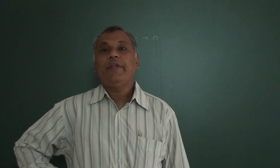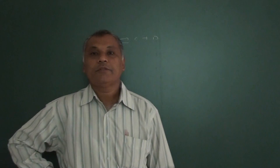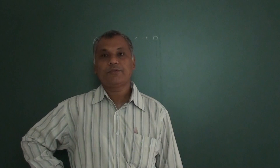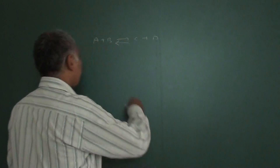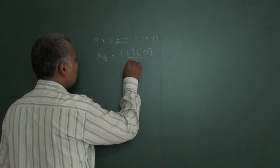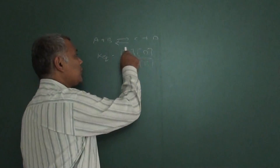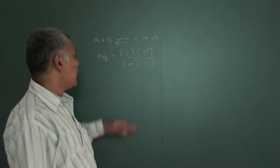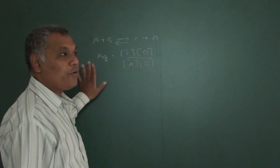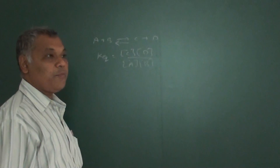The condition when equilibrium will be established, or whether the reaction is under equilibrium condition or not, can be predicted by some method. We have specific rules. When we write the reaction quotient, we are indicating the concentration of products upon reactants. If the concentration of products is much higher, then Qc will be higher.